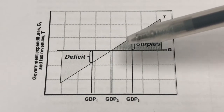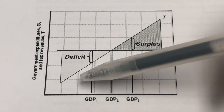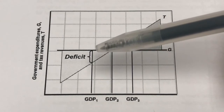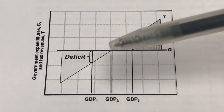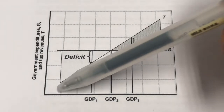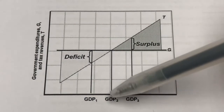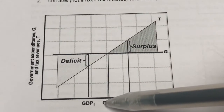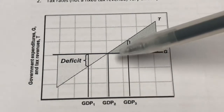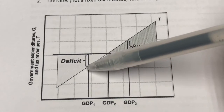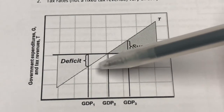When GDP falls, income levels fall as well. When income levels fall, tax revenues will also automatically fall, because taxes have a positive relationship with income. So when there's a recession — falling income, falling GDP — tax revenues also automatically fall. At GDP1, the amount of government spending is more than the amount of T, therefore we have a deficit.